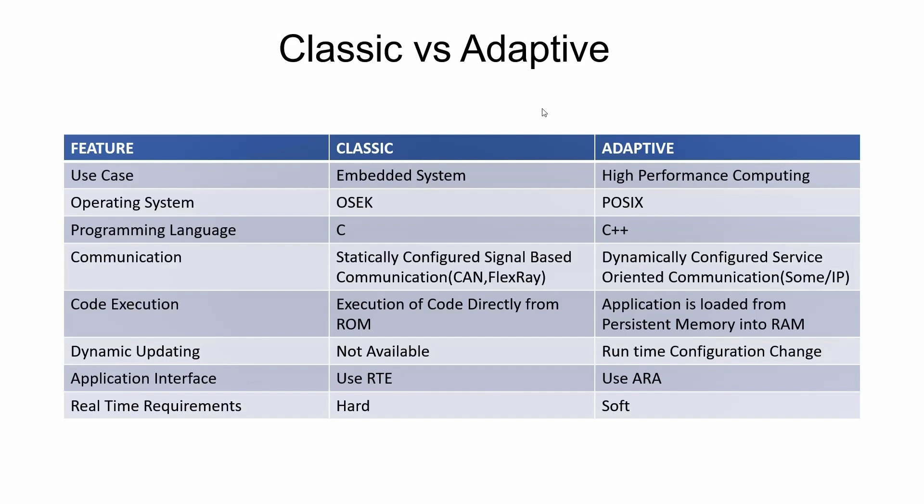Regarding communication: Classic AutoSAR is statically configured and uses signal-based communication — for example, CAN and FlexRay protocols. Adaptive AutoSAR is completely dynamically configured, uses service-oriented and event-based communication, and supports the SOME/IP protocol. Regarding code execution: in Classic AutoSAR, code is executed directly from ROM, while in Adaptive AutoSAR, the application is loaded from persistent memory into RAM.